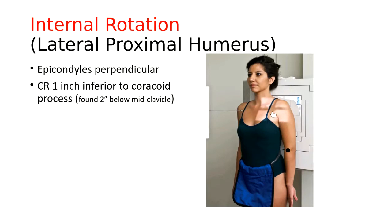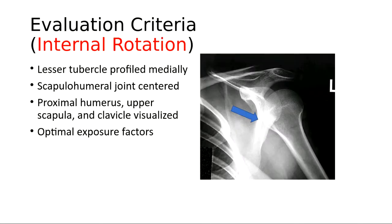Literally all the patient did from the first exposure to the second is internally rotate their hand — same central ray, same marker, same shielding. They just took their hand from supinated to internally rotated, placing the top of their hand against their thigh. The exposure is made on suspended respiration. Again, you want to demonstrate the entire clavicle; this image cuts off the sternal end because it's collimated 10 by 12 lengthwise instead of crosswise.